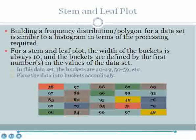In this data set, the buckets are therefore 40 to 49, 50 to 59, etc.